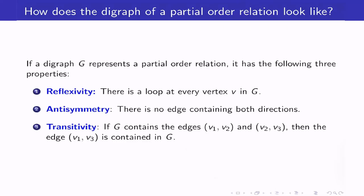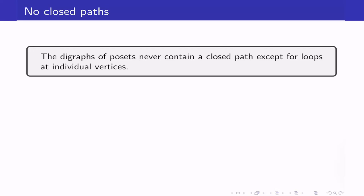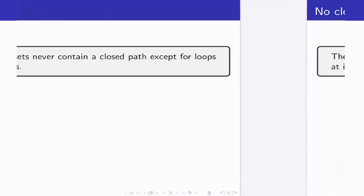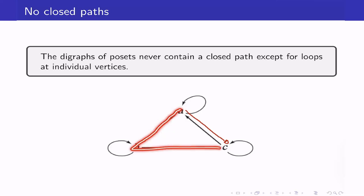Next, transitivity: if G contains edge (V1, V2) and edge (V2, V3), then V1 must be related to V3. An important thing to know about the digraphs of posets is that they never contain a closed path except for loops at individual vertices. You cannot have A related to B, B related to C, and then C related back to A. By transitivity, the order should be A related to B, B related to C, then A related to C — that is not a closed path. But going A to B, B to C, and C back to A is a closed path.